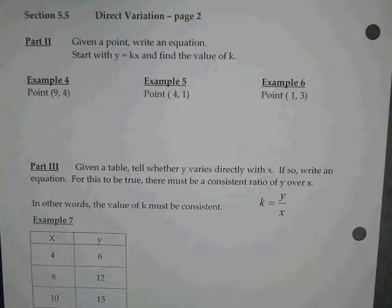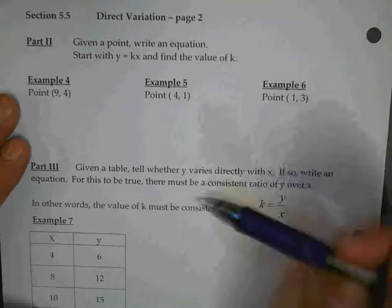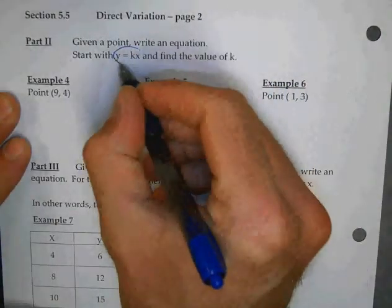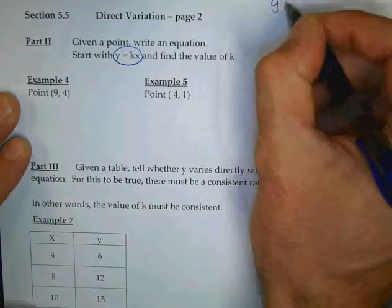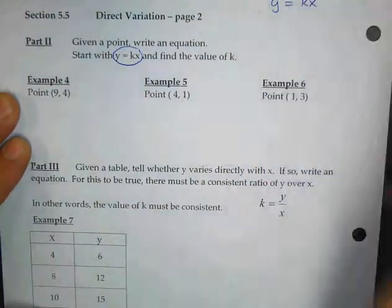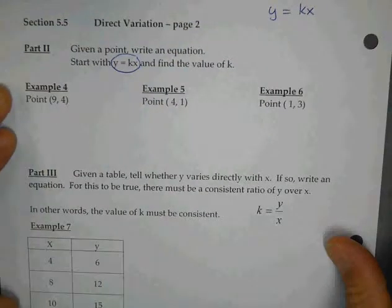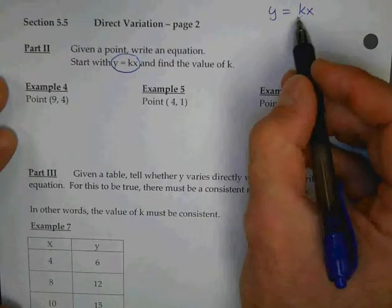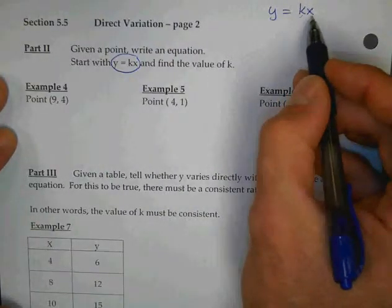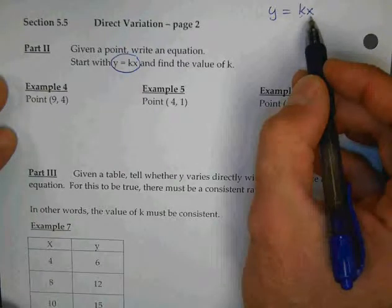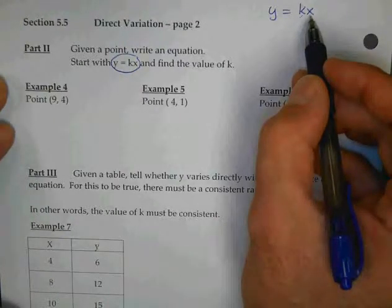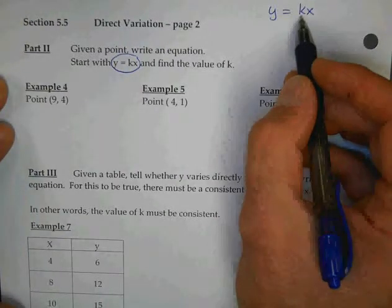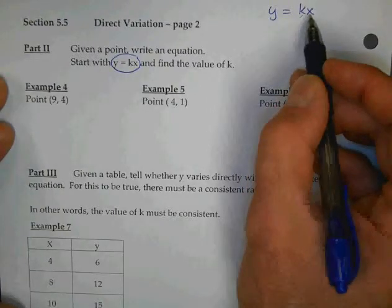Now, y equals kx is our basic equation. However, if I say y equals kx, that's nice, but it doesn't really tell me what the value of k is. How could I get this value of k by itself? How do I get rid of this x? What do you think? How do you disconnect the k from the x and move the x over to the other side?